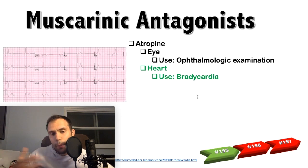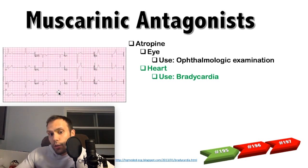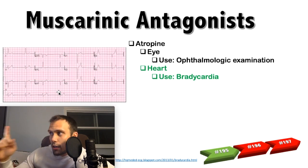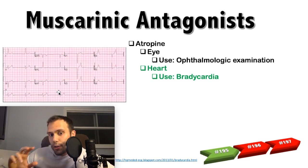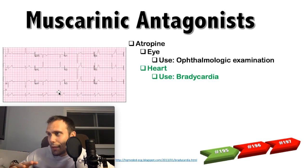If somebody has significant bradycardia — say after an MI — you can give them atropine. Cholinergic activity slows the heart rate, so anticholinergic activity causes tachycardia. Atropine binds to muscarinic M2 receptors at the heart and blocks the effects of the vagus nerve at the sinoatrial node. It can also increase conduction at the AV node and shorten the PR interval.